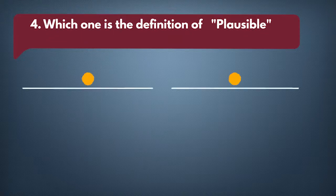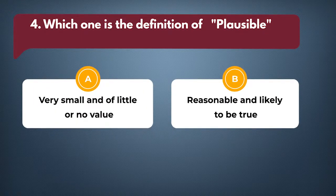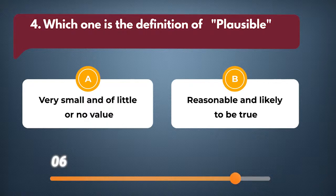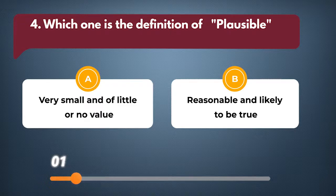Which one is the definition of plausible? A: Very small and of little or no value. B: Reasonable and likely to be true. The answer is B: Reasonable and likely to be true.